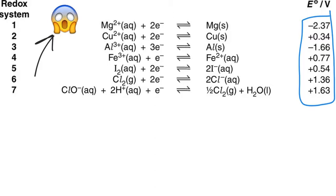But then there is a jump to the copper which is +0.34V, and then back down again to the second most negative one which is the aluminium at -1.66V.